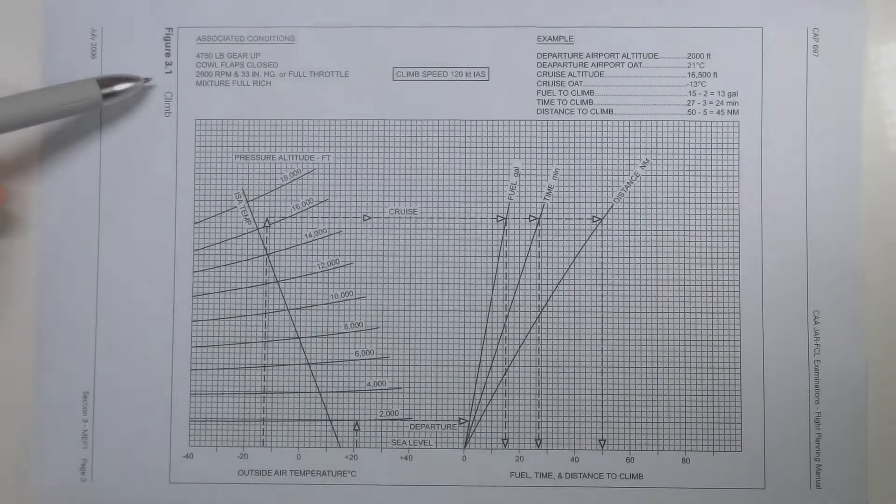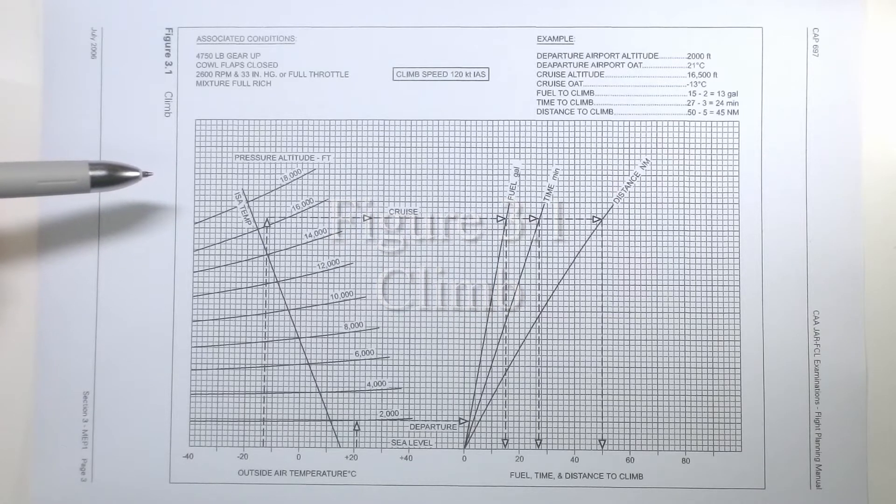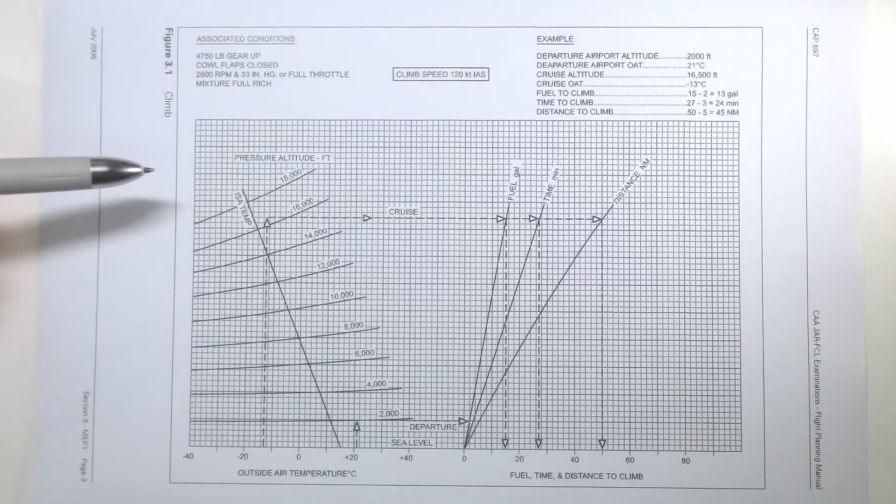Figure 3.1 climb for the multi-engine piston aeroplane looks very similar to the fuel time and distance to climb chart that we had for the single-engined aeroplane or MEP-1. However there are some minor differences.